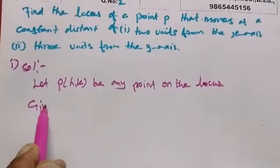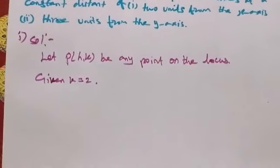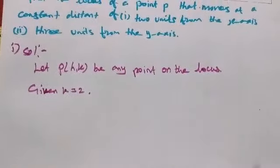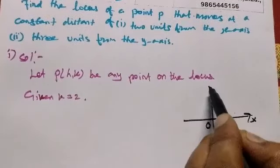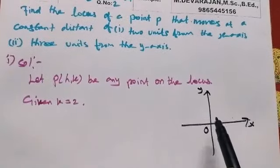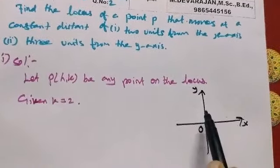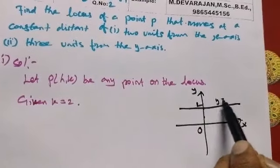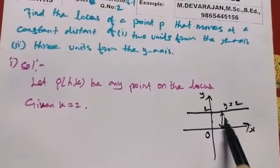Given k equal to 2, so we are going to drop 2 units from the X axis. The Y axis is 2 units from the X axis. Here we are going to drop 2 in the distance, so h and k.